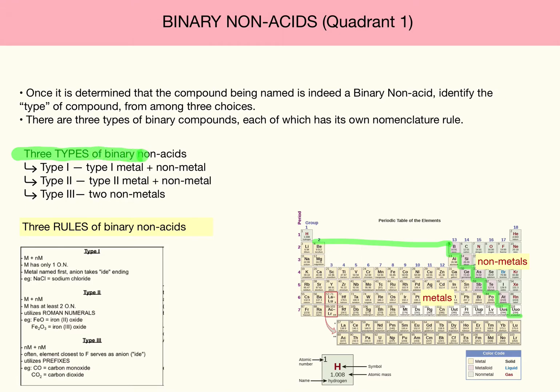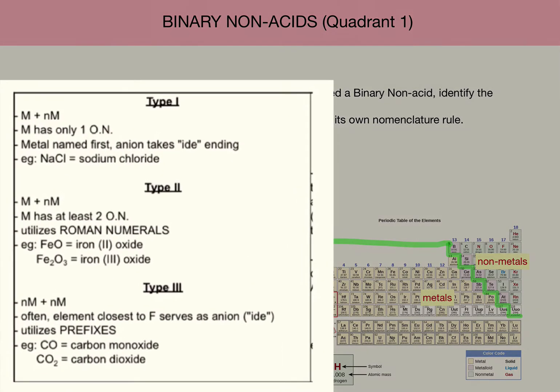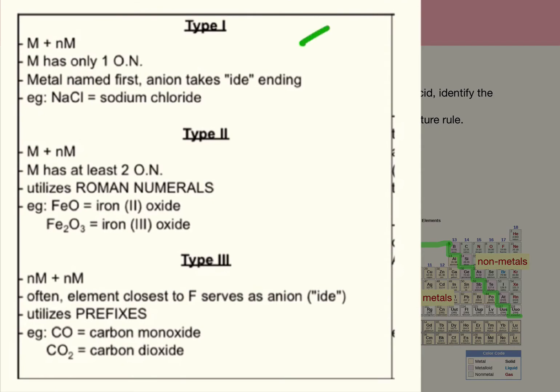So let's have a quick look at the three types of binary non-acids. They're referred to as type 1, type 2, and type 3.